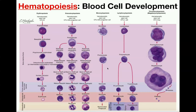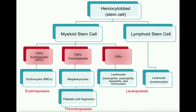Hematopoiesis is very complicated — we'll cover it in detail in a separate video. Generally speaking, all three formed elements originate from a pluripotent stem cell called a hemocytoblast. Depending on what kind of colony stimulating factors we have, we can get different cell types. A colony stimulating factor is a type of molecule that nudges the hemocytoblast to go in one of these directions — forming erythrocytes, platelets, leukocytes, or lymphocytes — dictating which cell lineage it will differentiate into.